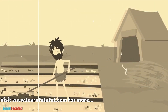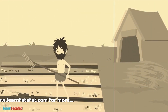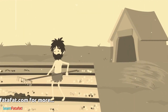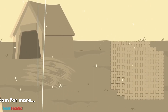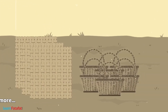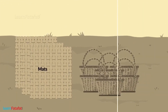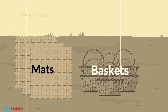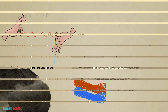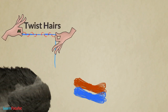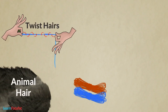During the time they started farming, they learned to weave twigs and grass so as to form mats and baskets. They also learned to twist hairs obtained from animal bodies so as to form long strands.